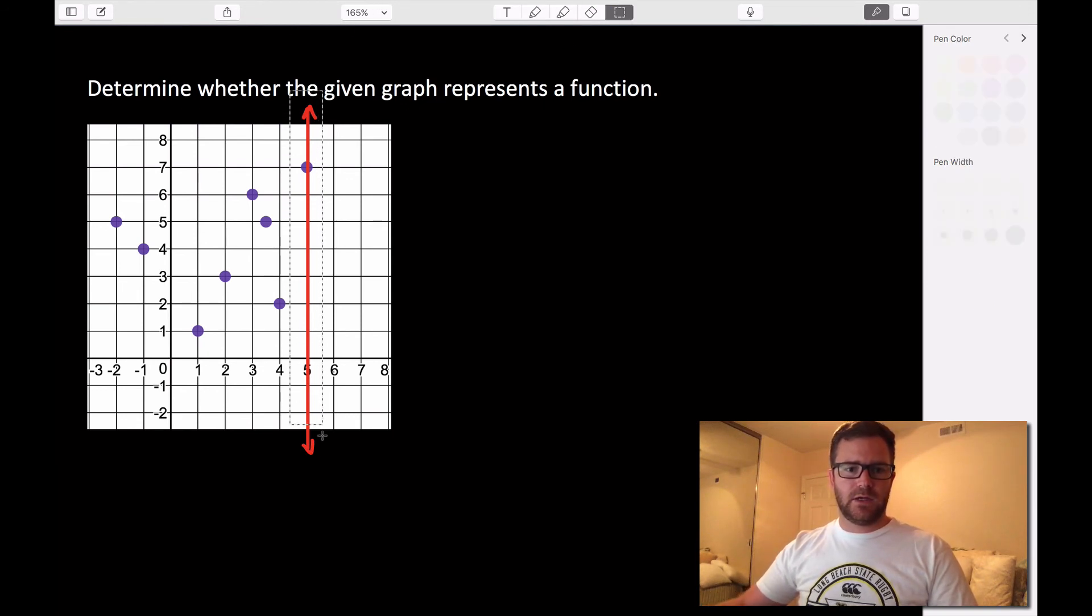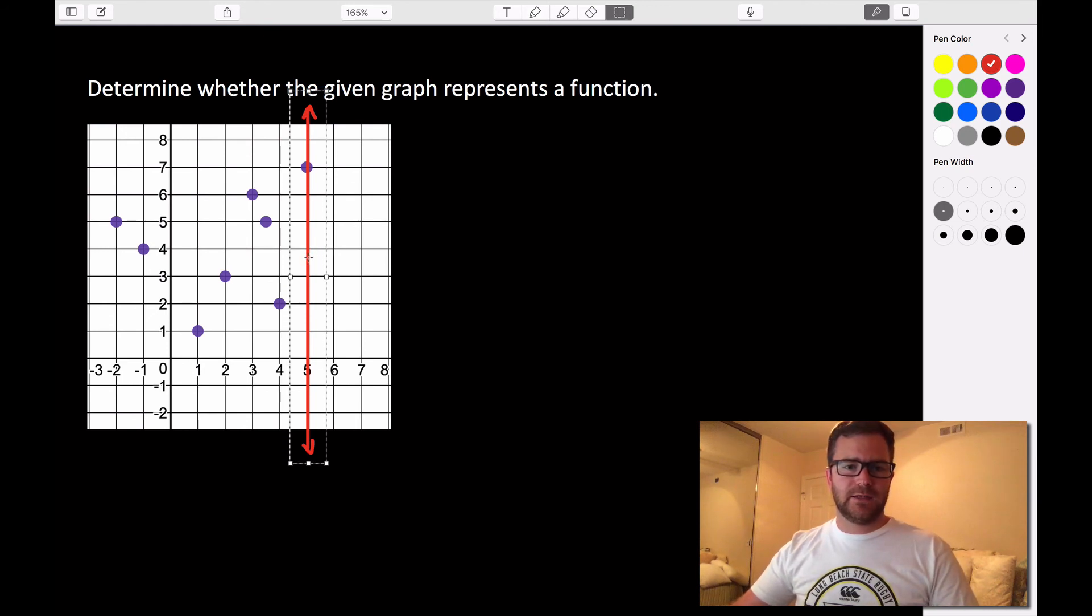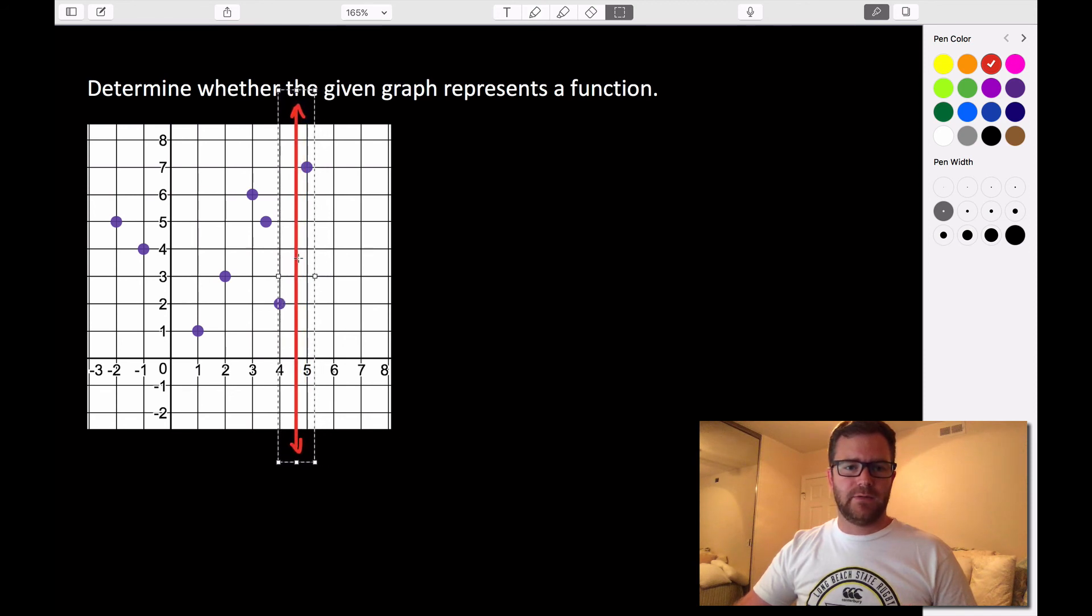We're going to take this red line, and we're going to drag it across our entire graph and see if it ever intersects more than a single point at any given time.